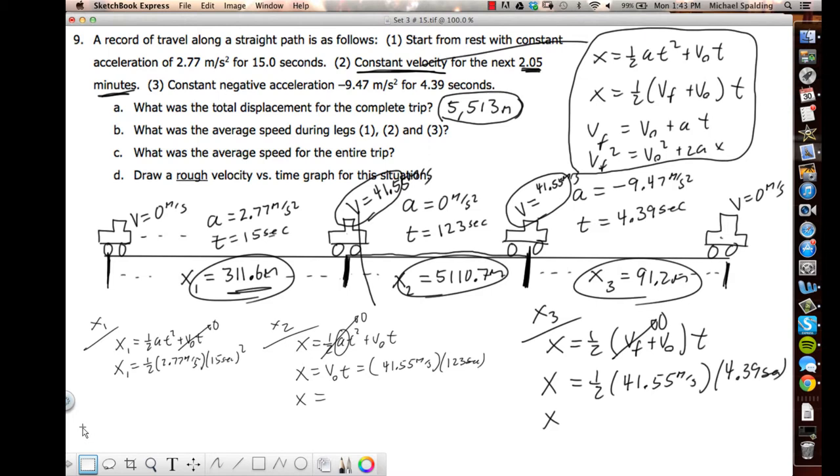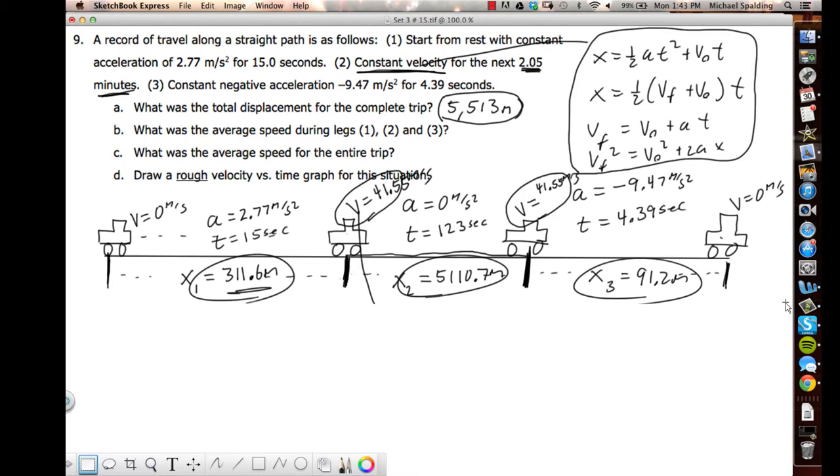Part B, the rest of this is fast now. Part B wants the average speed during 1, 2, and 3. So basically velocity, what's the average velocity? This is displacement over time. What was the total displacement for the whole journey? 5,513 meters. What's the total time for the whole journey? You've got to add the three together: 15 seconds plus 123 plus 4.39. The total time for the journey is 142.39 seconds. So this gives 38.7. That's part B.